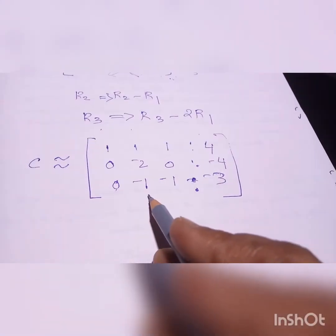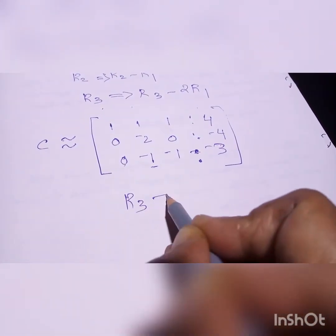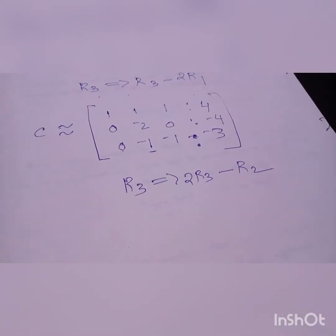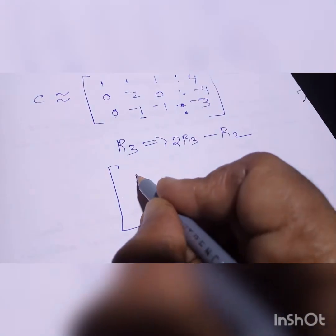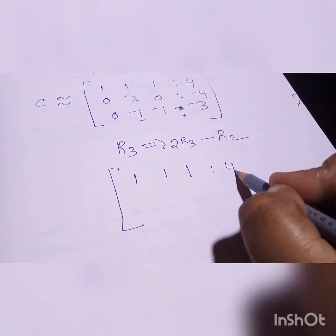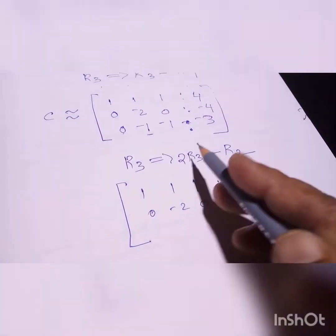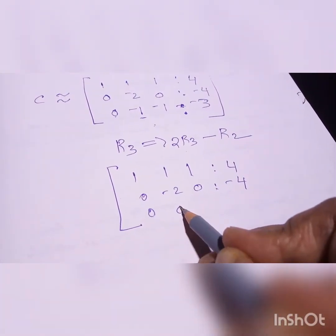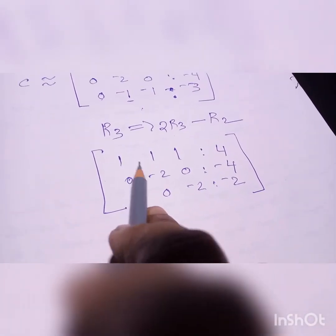Now we have this matrix. We can see the element minus 1 still needs to be changed. So the next calculation is R3 → 2R3 minus R2. Rows 1 and 2 remain unchanged: 1, 1, 1 | 4 and 0, minus 2, 0 | minus 4. For the third row, applying 2R3 minus R2 gives 0, 0, minus 2 | minus 2. Now below the diagonal all three elements have become 0.